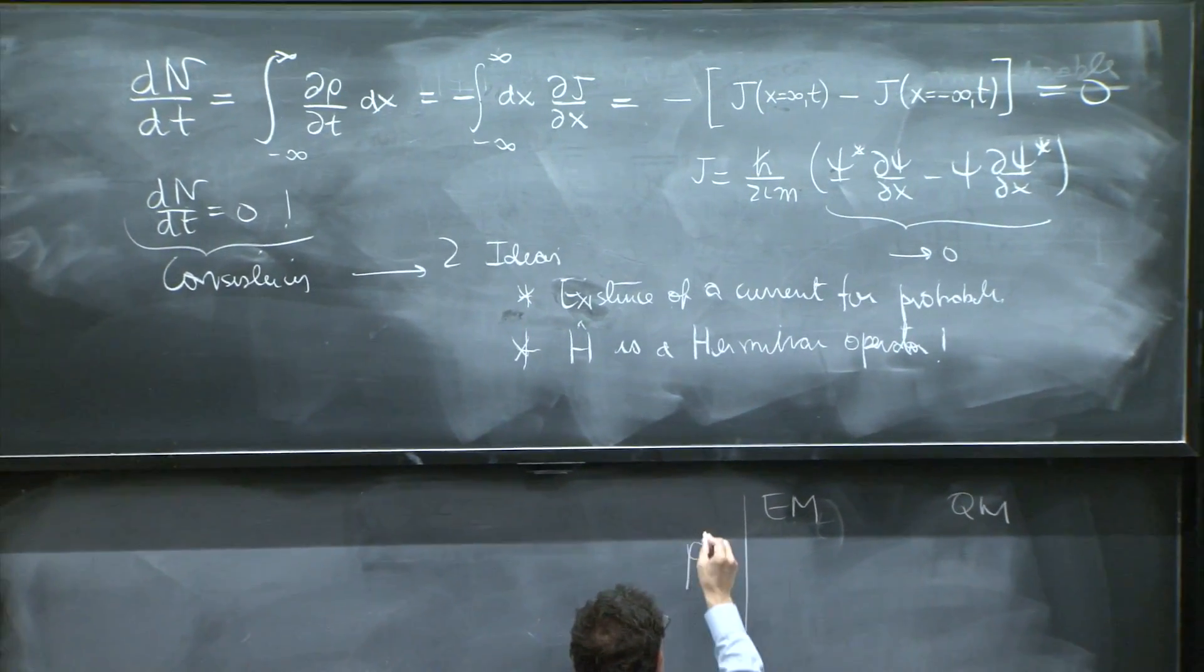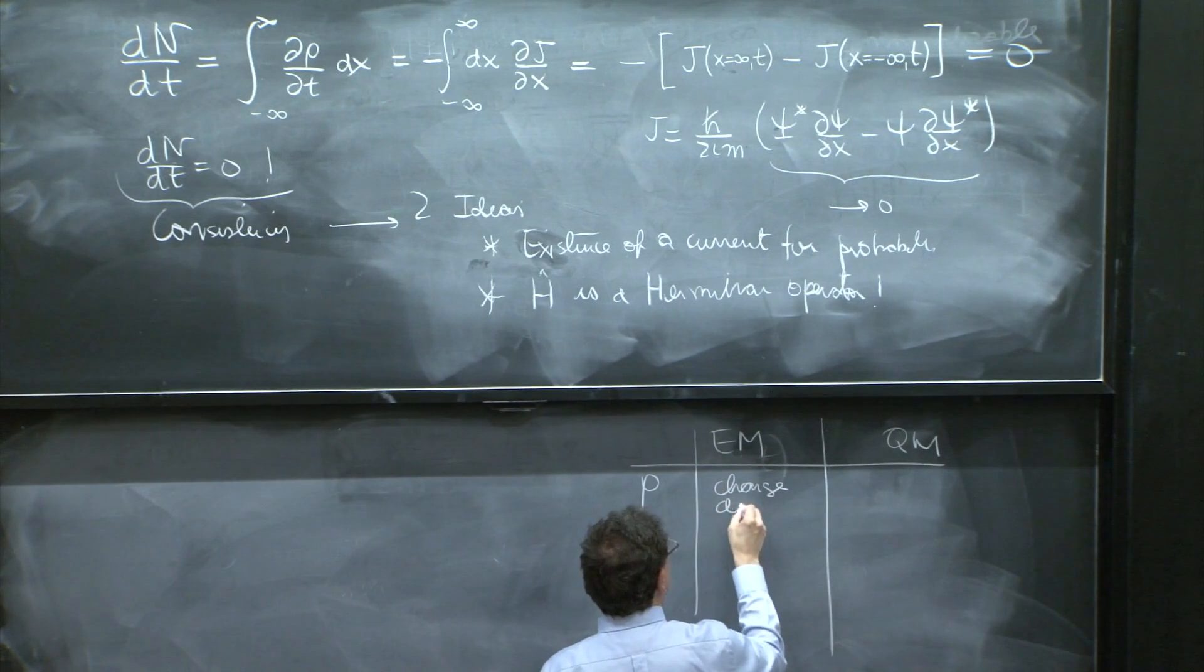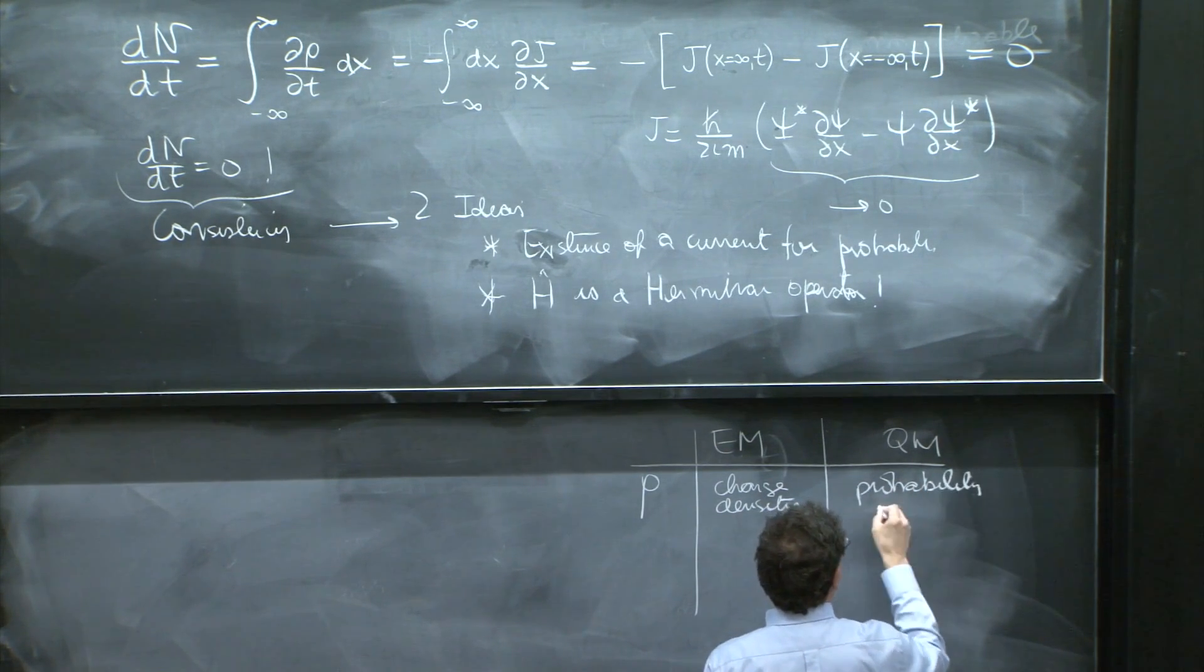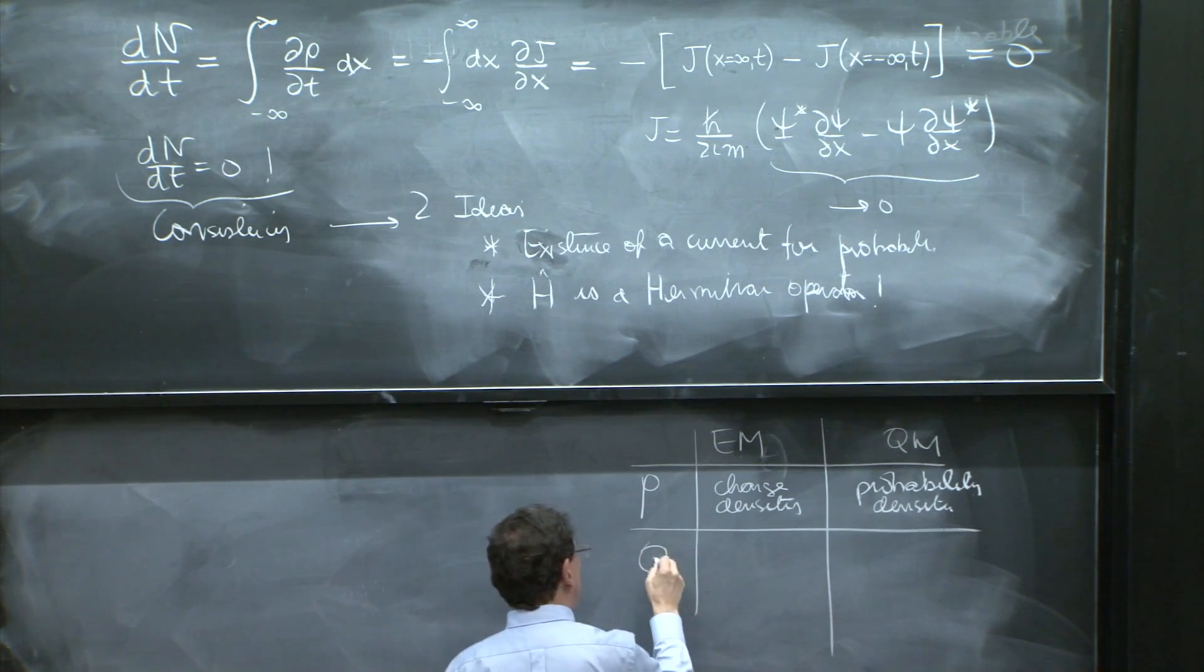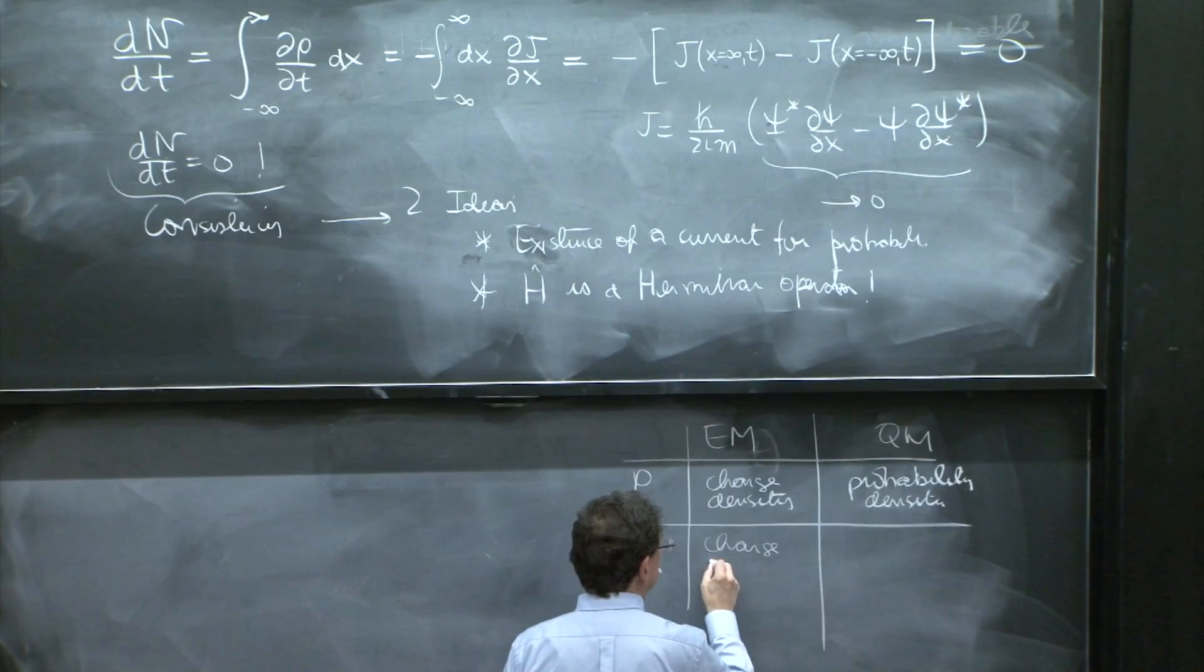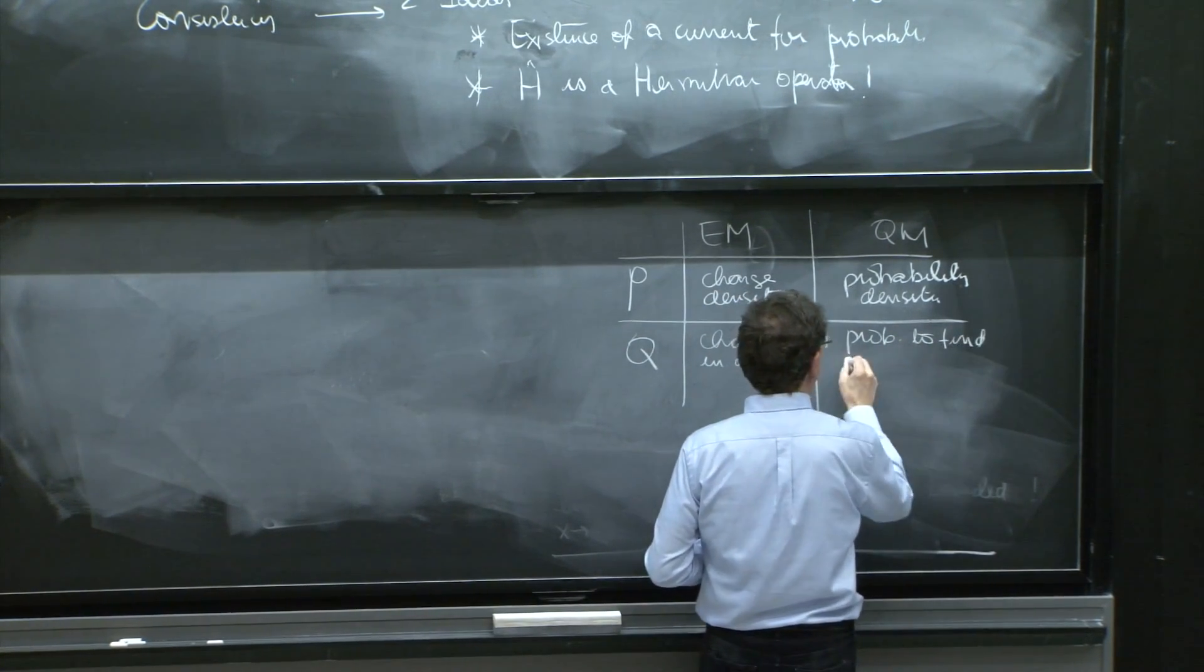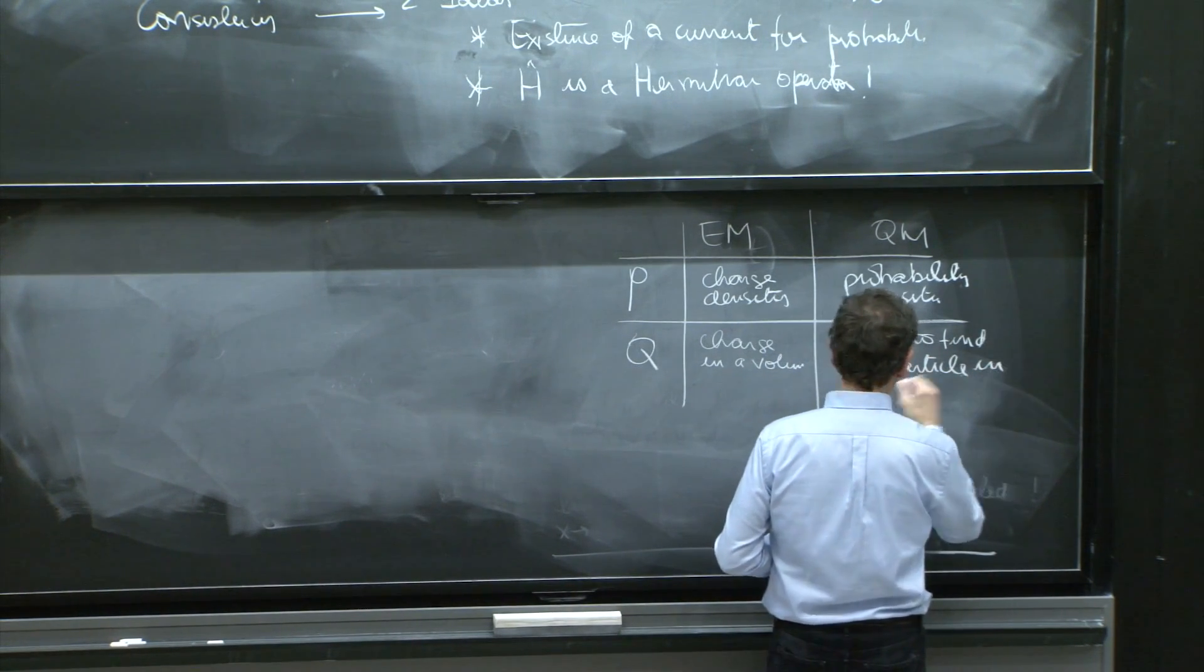So, we have electromagnetism and quantum mechanics. We have rho. Here is the charge density. Here's the probability density. And here's the probability density. Probability density. If you have a total charge, q, in a volume, charge in a volume, a volume, here is the probability to find the particle in a volume, in a volume.